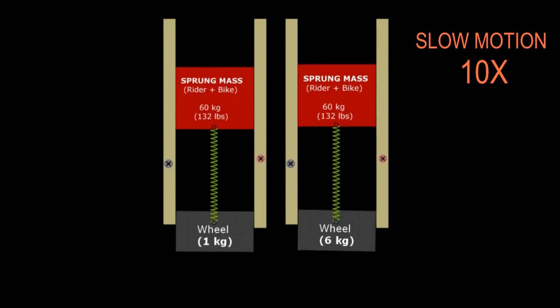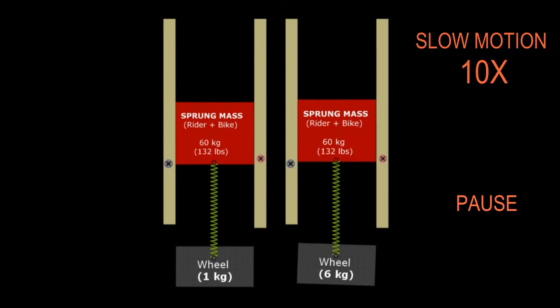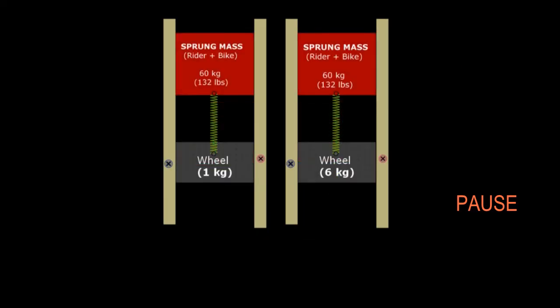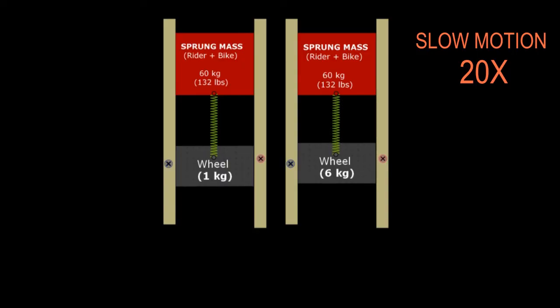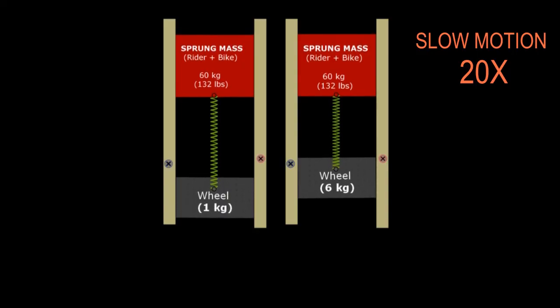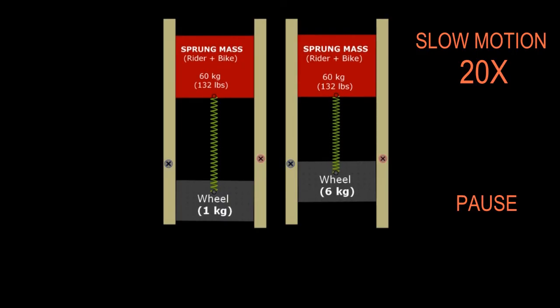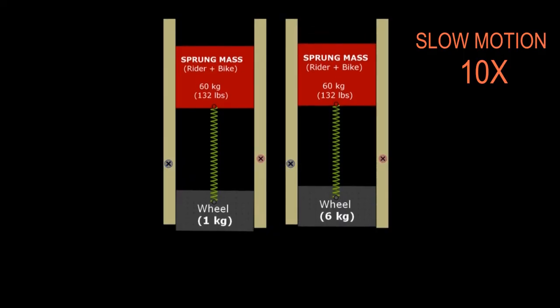As you can see, the lighter wheel moves down faster than the heavier wheel. Okay, the suspension can push down the wheel faster. I'm going to repeat again in slow motion. Okay, as you can see, the lighter wheel moves down faster, and after the suspension fully extends, both wheels move at the same velocity.